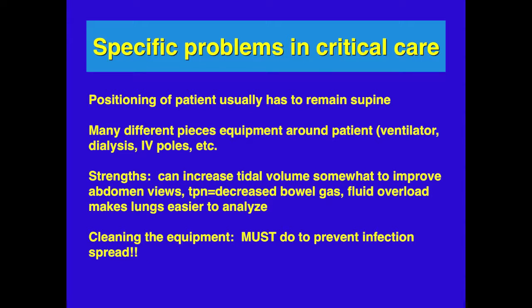Specific problems in critical care include patient positioning — patients usually have to remain supine, so you can't move them to left lateral decubitus to improve heart views or sit them up to improve pleural effusion views. Many different pieces of equipment surround the patient, such as the ventilator, dialysis machine, and IV poles, and you have to get used to functioning around these. Strengths include that you can increase tidal volume to improve abdominal views, and TPN can decrease bowel gas, though these are hard to adjust in real time.